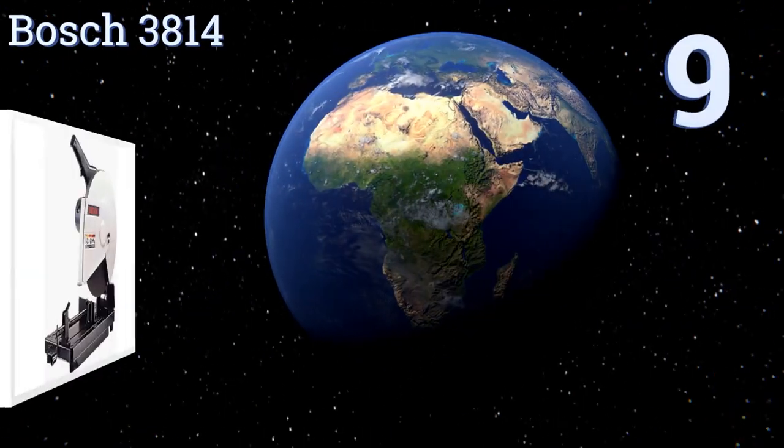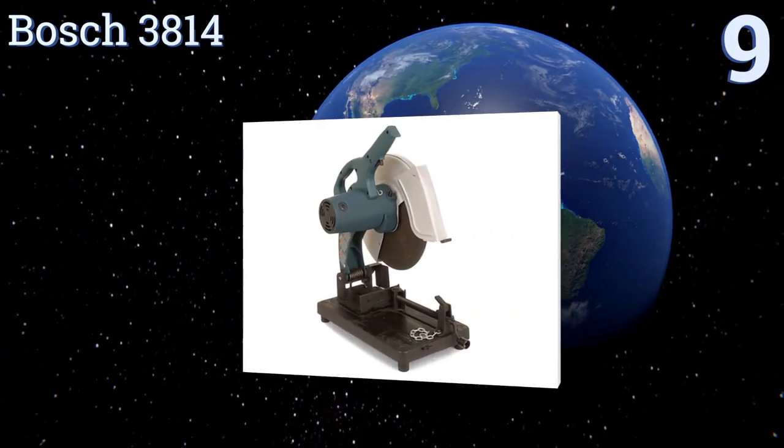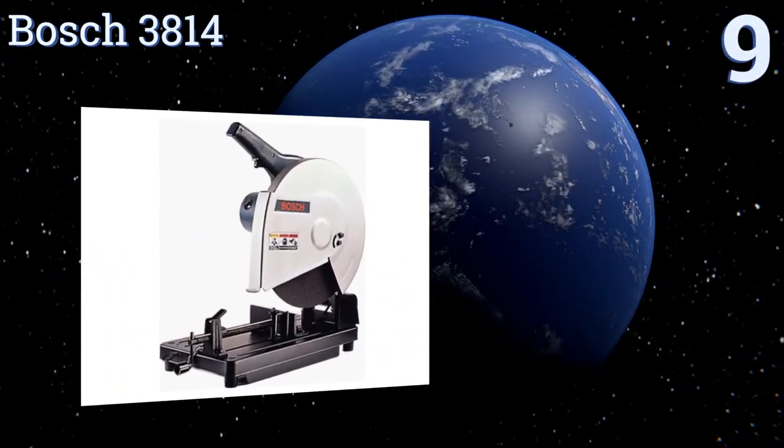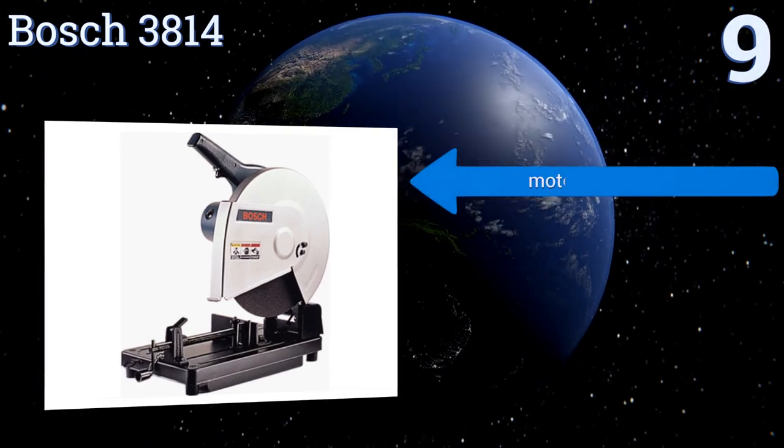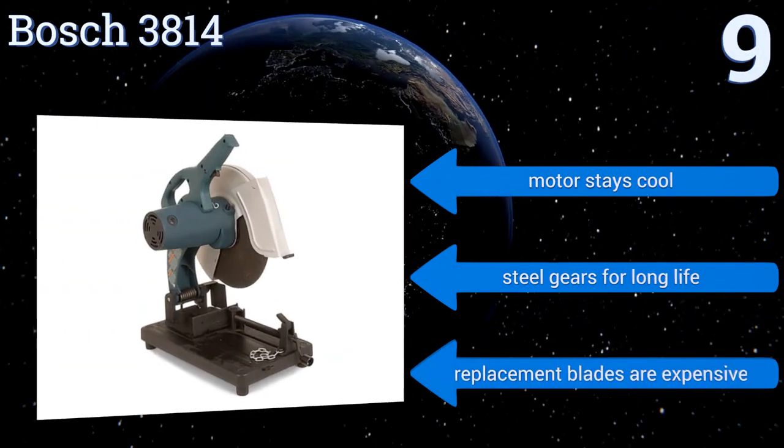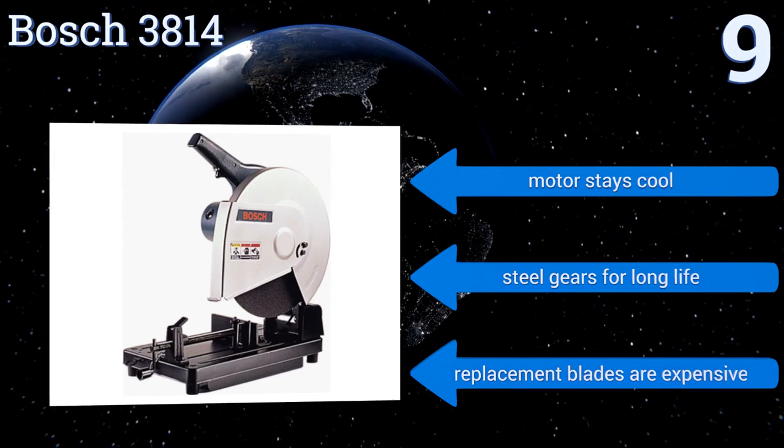Starting off our list at number nine, the Bosch 3814 has a heavily insulated motor ensuring that it doesn't grind to a halt when you're making tough cuts. The cast metal base is extremely stout and the fence adjusts to 45 degrees for bevel cuts. Be sure to wear earplugs though, because it's extremely loud.